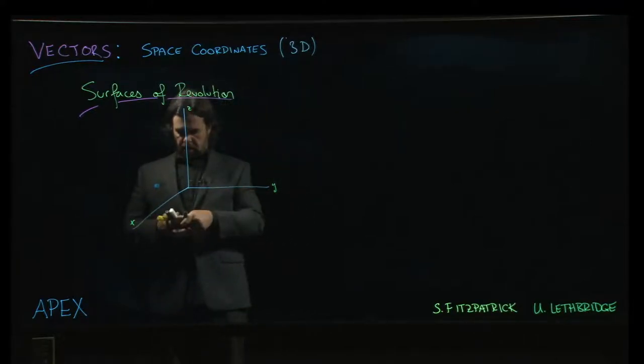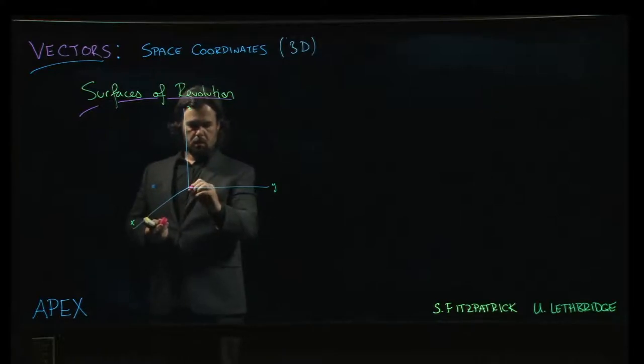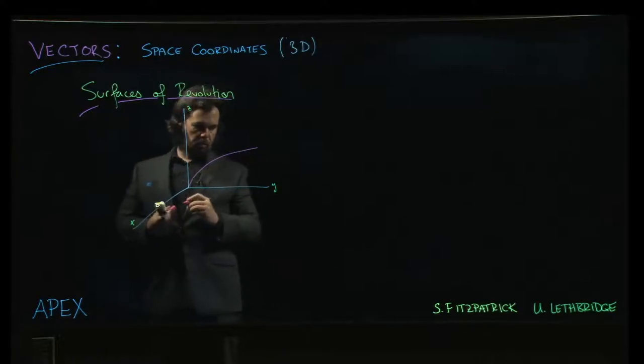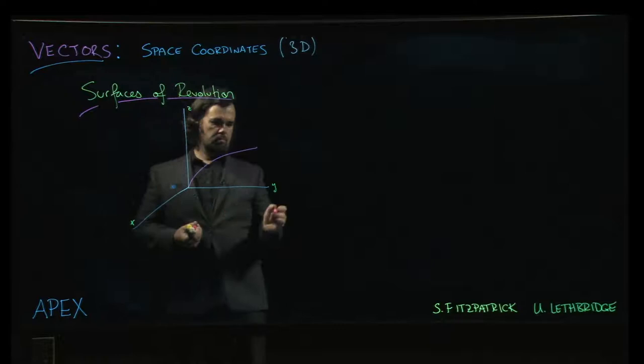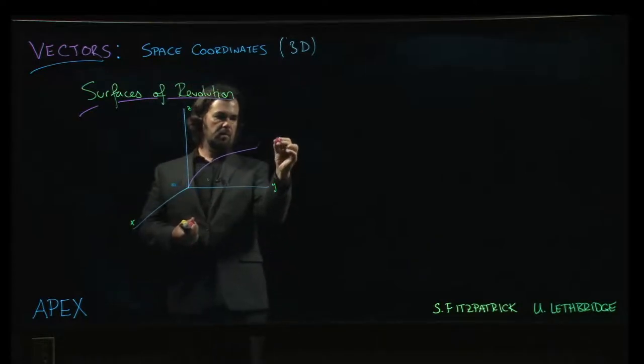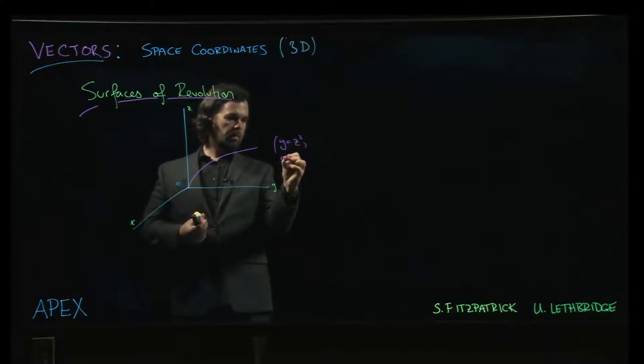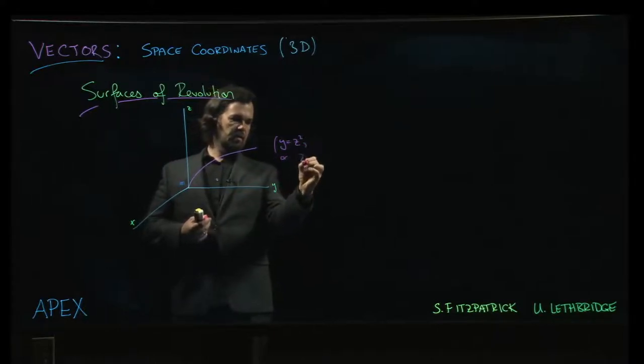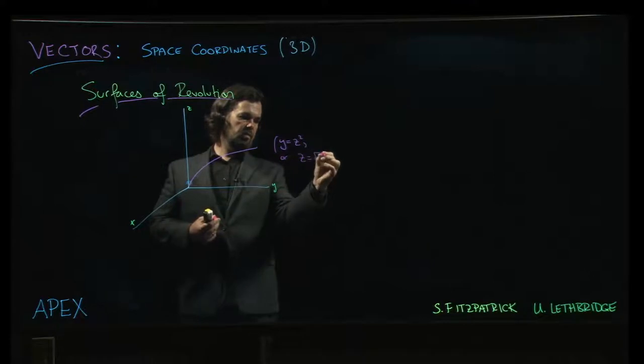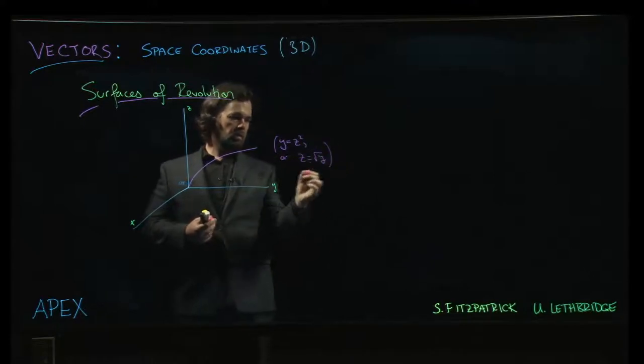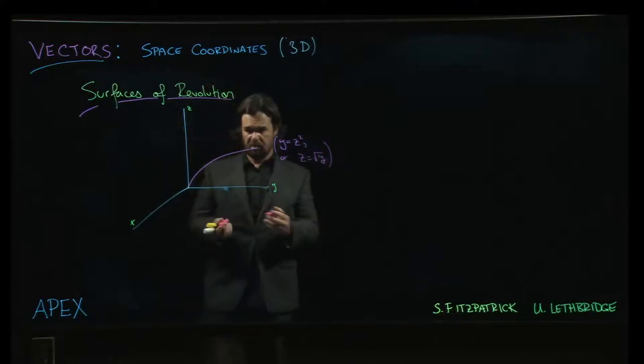So why don't I draw it, let's say, this way, like so. Now that there is going to be, that's y is equal to z squared, but we might also write that as z is equal to the square root of y. Let's say z is the square root of y.